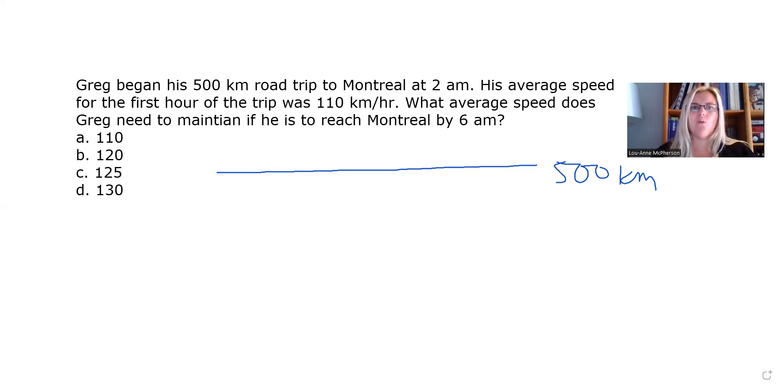So it says he began his 500-kilometer road trip to Montreal at 2 a.m. So I'm going to put in at the beginning here 2 a.m. That's his starting time. And at the end of the question, it says, what average speed does Greg need to maintain if he is to reach Montreal by 6 a.m.? So we're going to put a 6 a.m. at the end.